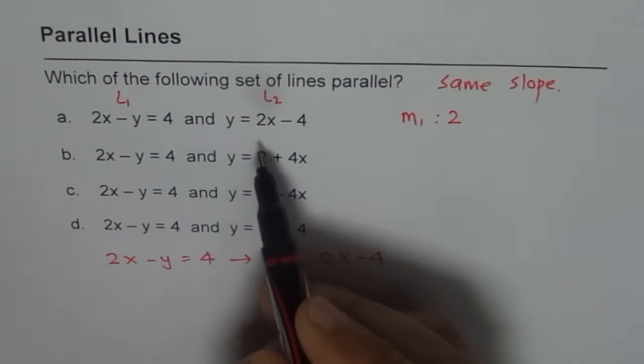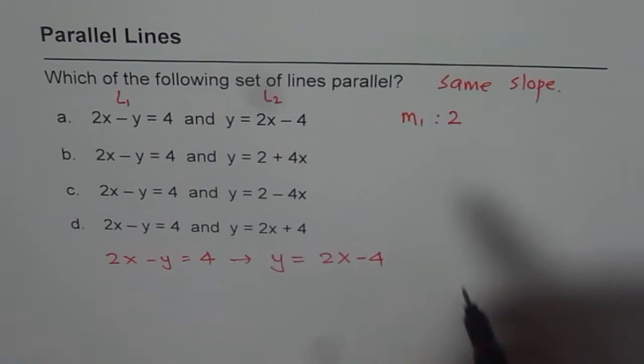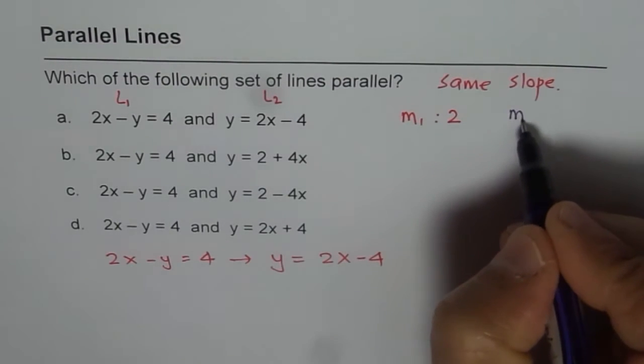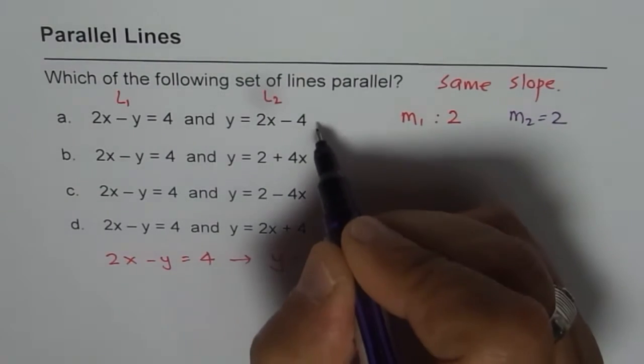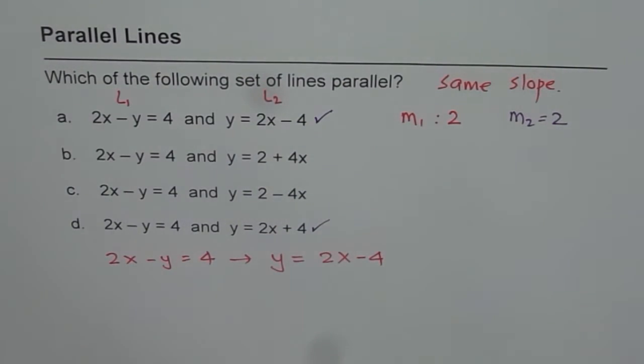Now if you see these lines then the two equations which qualify for same slope, slope of 2, m2 should be 2. So this equation qualifies and that also qualifies. But are both parallel? Can you answer that part?